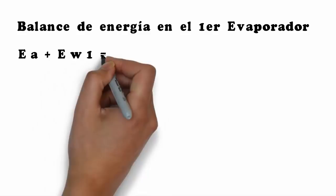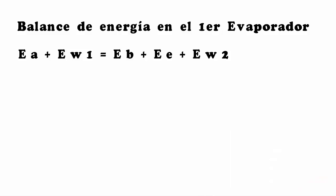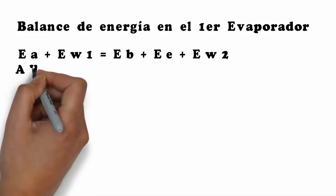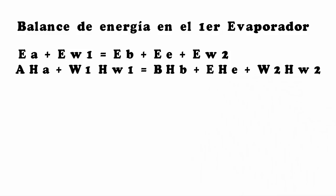The next step is to perform an energy balance on the first evaporator. The energy of A plus the energy of W1 equals the energy of B plus the energy of E plus the energy of W2. Expanding this equation using enthalpies: A·HA + W1·HW1 = B·HB + E·HE + W2·HW2.